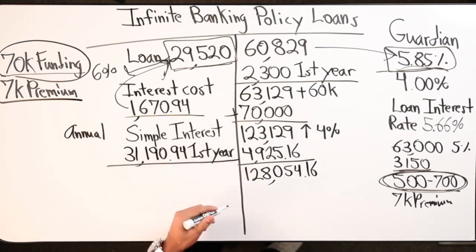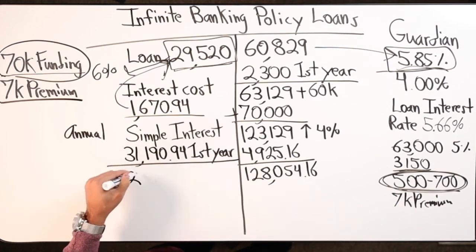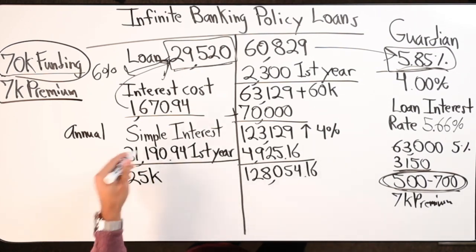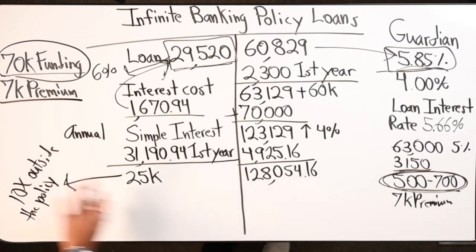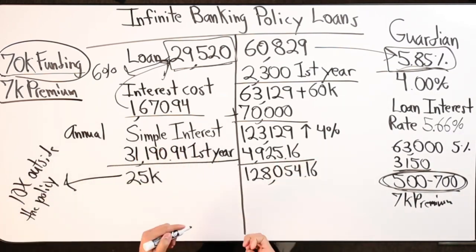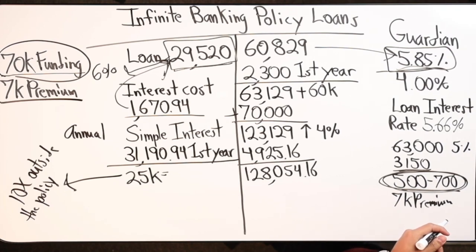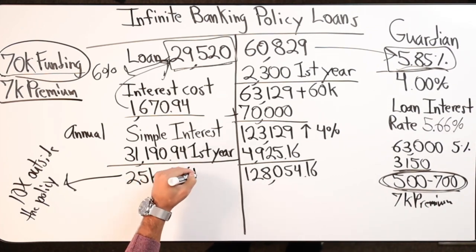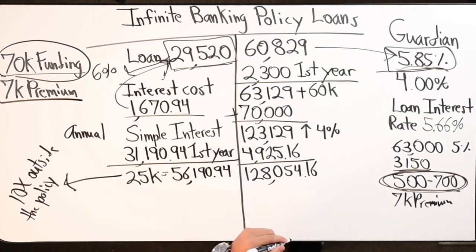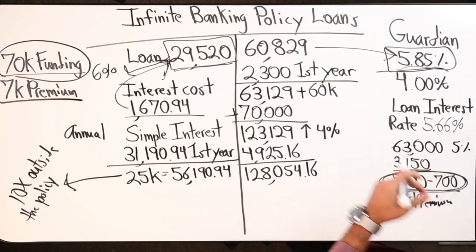So $123,129 plus $4,925.16 - and let's say I also took out another loan for $25,000, and I went to go 10x that number outside the policy. Got that money working for me, got the rest sitting in there. So $25,000 plus $31,190.94 - now I've got $56,190.94 in policy loans. Times that by 5.66%.